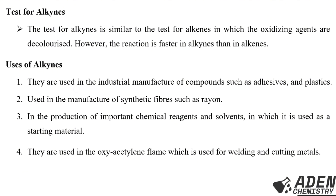Lastly, the uses of alkynes: number one, they are used in the industrial manufacture of compounds; number two, in the manufacture of synthetic fibers such as rayon; number three, in the production of important chemical reagents and solvents as a starting material; number four, in the oxygen-acetylene flame used for welding and cutting of metals. That is the end of our lesson today — thank you for watching.